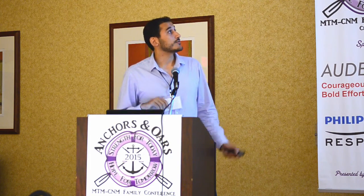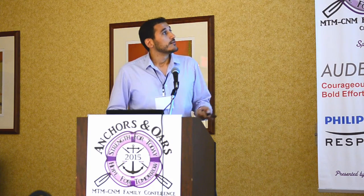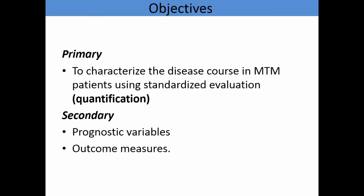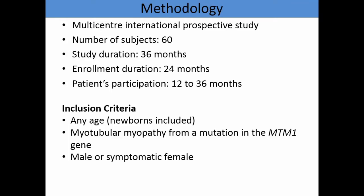The second study, which I'll cover briefly, is currently ongoing. It is a prospective longitudinal study of the natural history and functional status of patients with MTM. It is sponsored by Valerion and the Institute of Myology and Genethon. This is a multicentric international study with centers in Europe, across the U.S., and in our center in Canada. The objectives are to characterize the disease course of MTM and to identify prognostic variables and outcome measures. We are recruiting 60 patients over a 36-month study duration, with a follow-up duration of 24 months. Inclusion criteria is any age with a genetic diagnosis of MTM1, either male or symptomatic female.